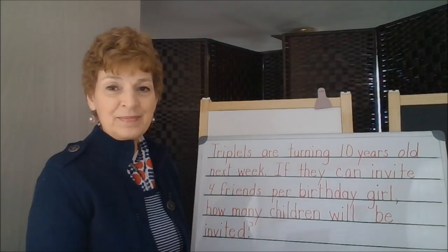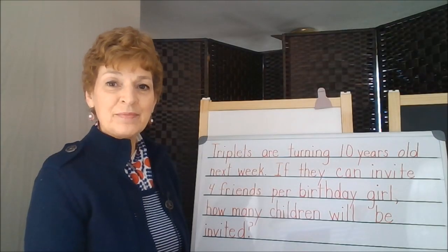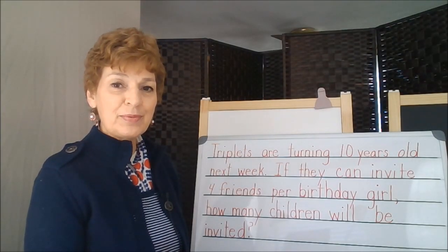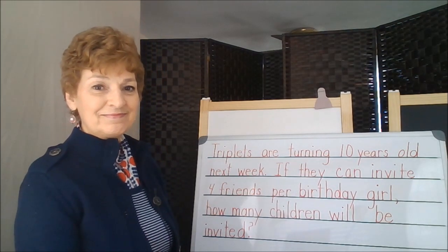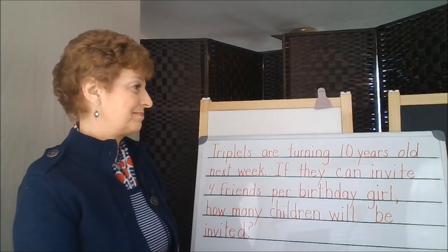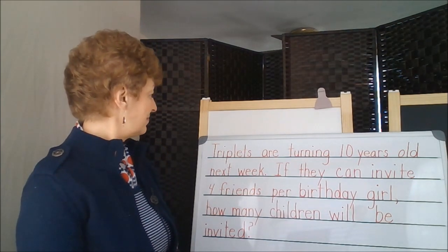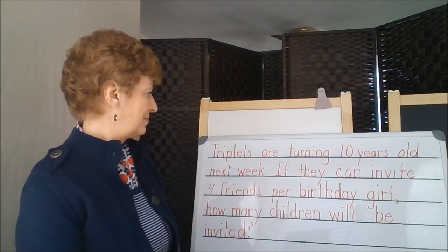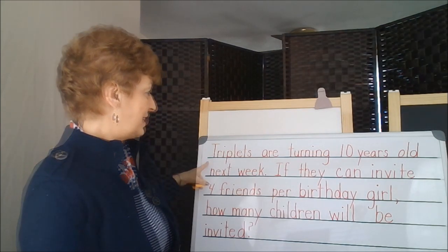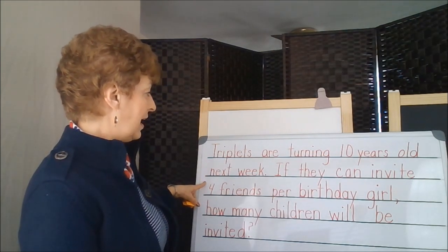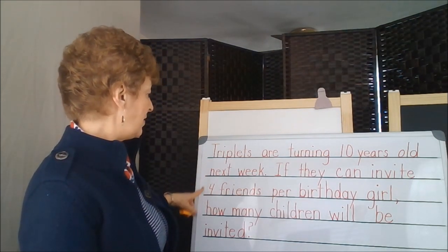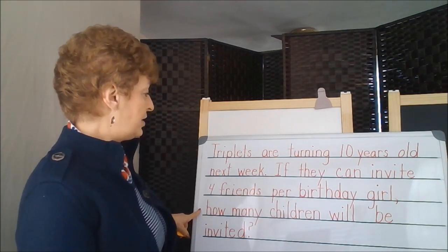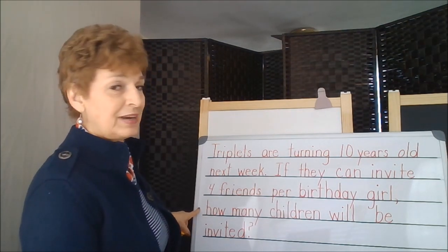Go ahead and read the problem and find the numbers and the words that tell the operation. Triplets are turning 10 years old next week. If they can invite four friends per birthday girl, how many children will be invited?